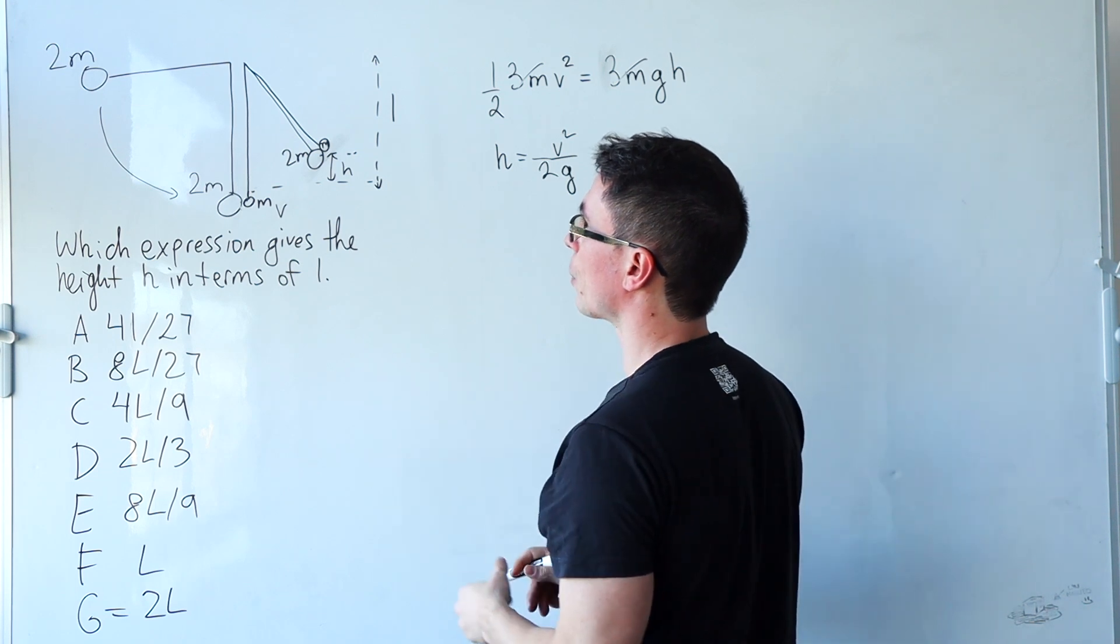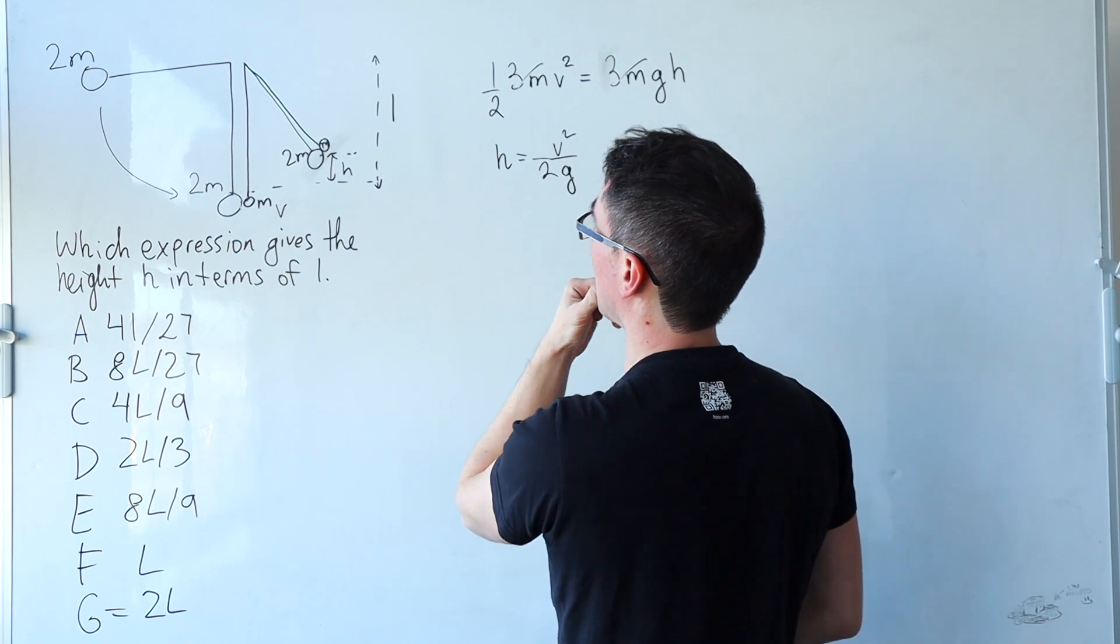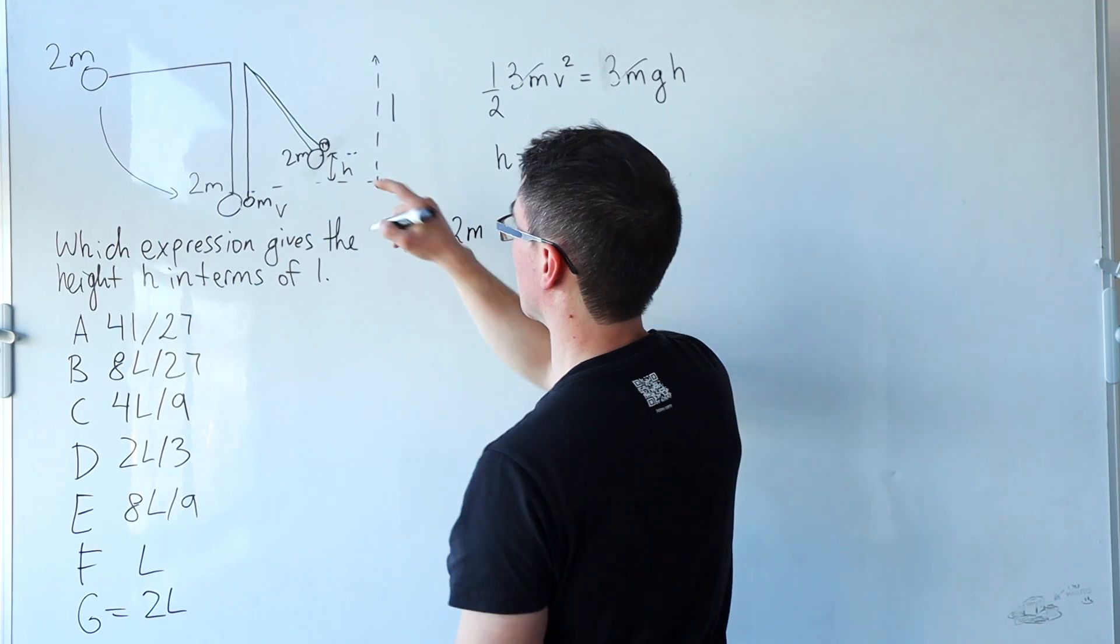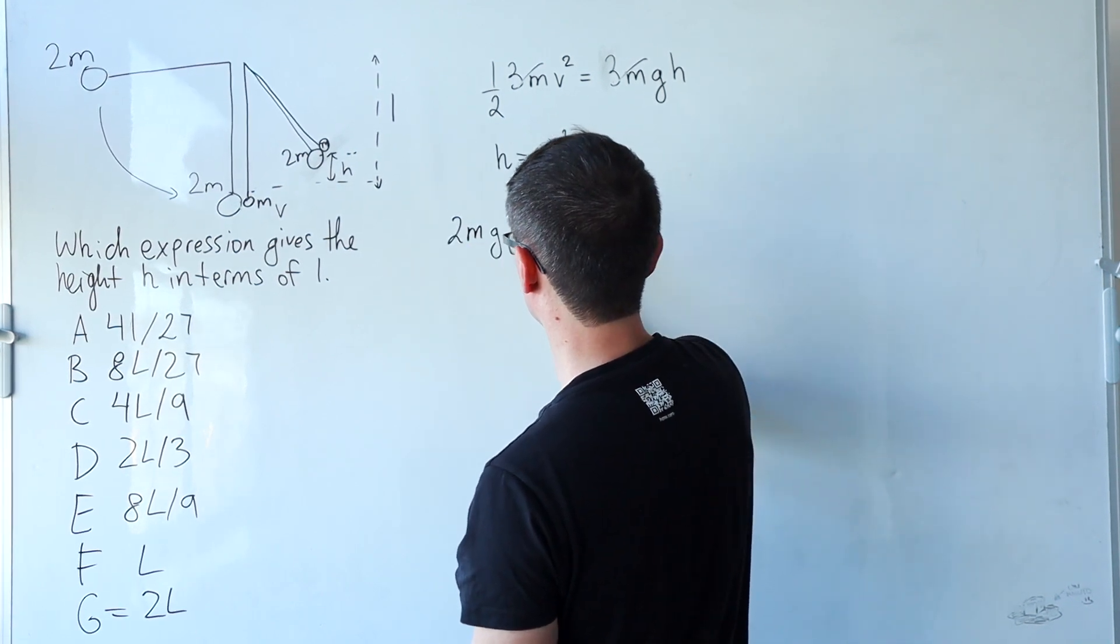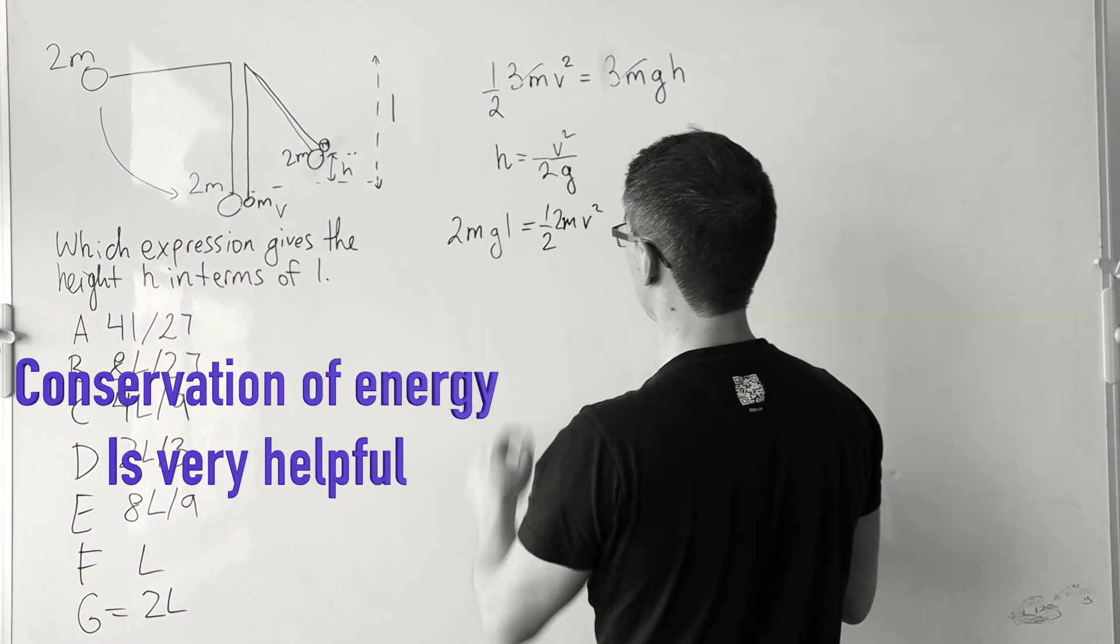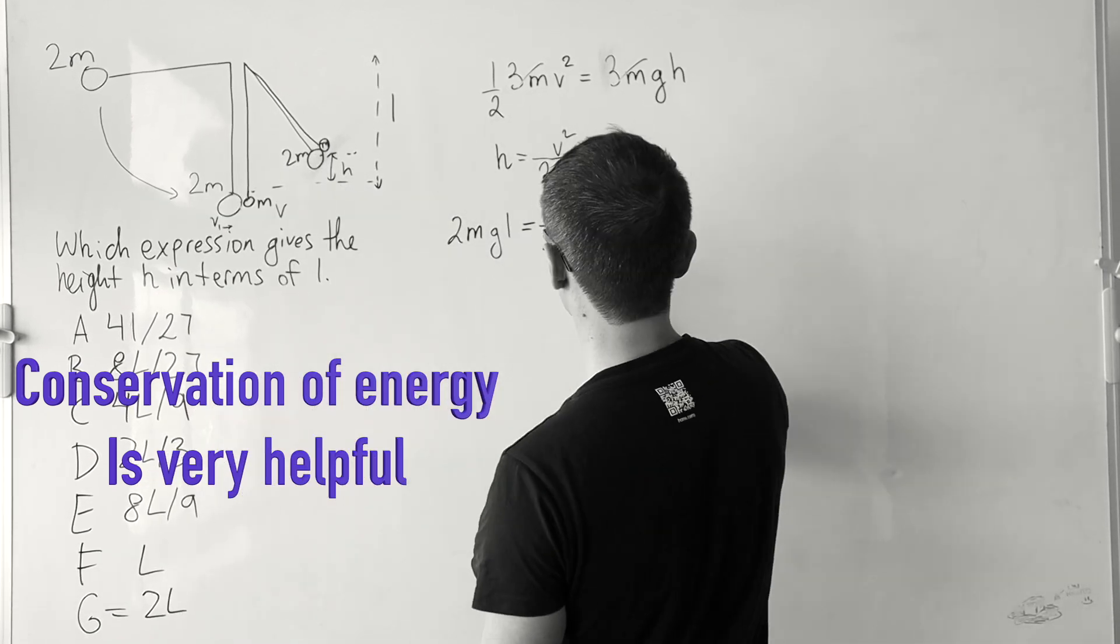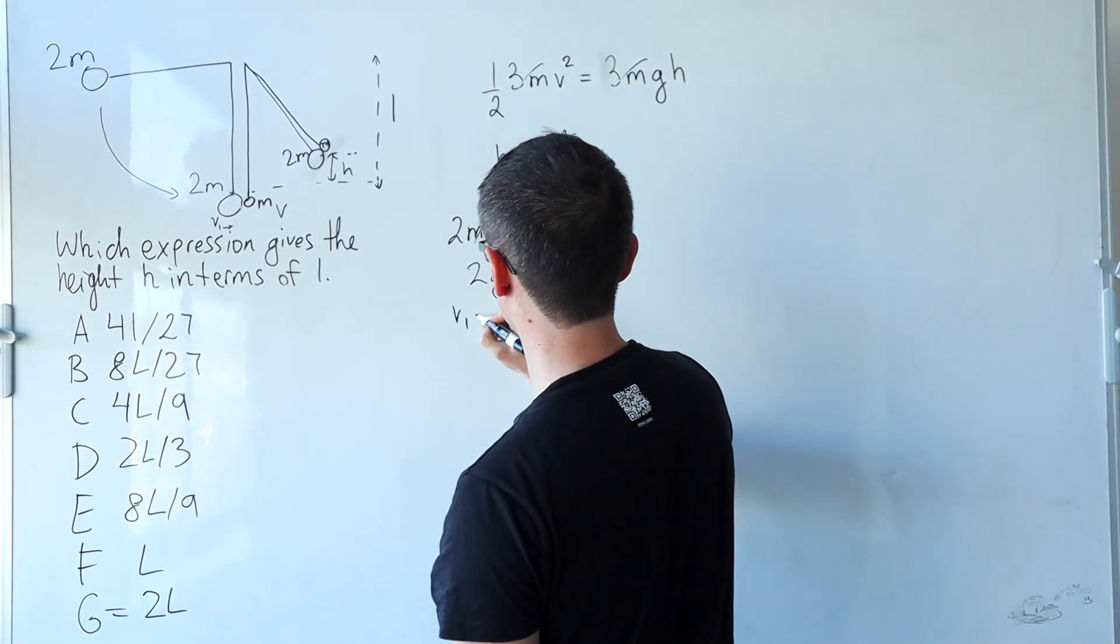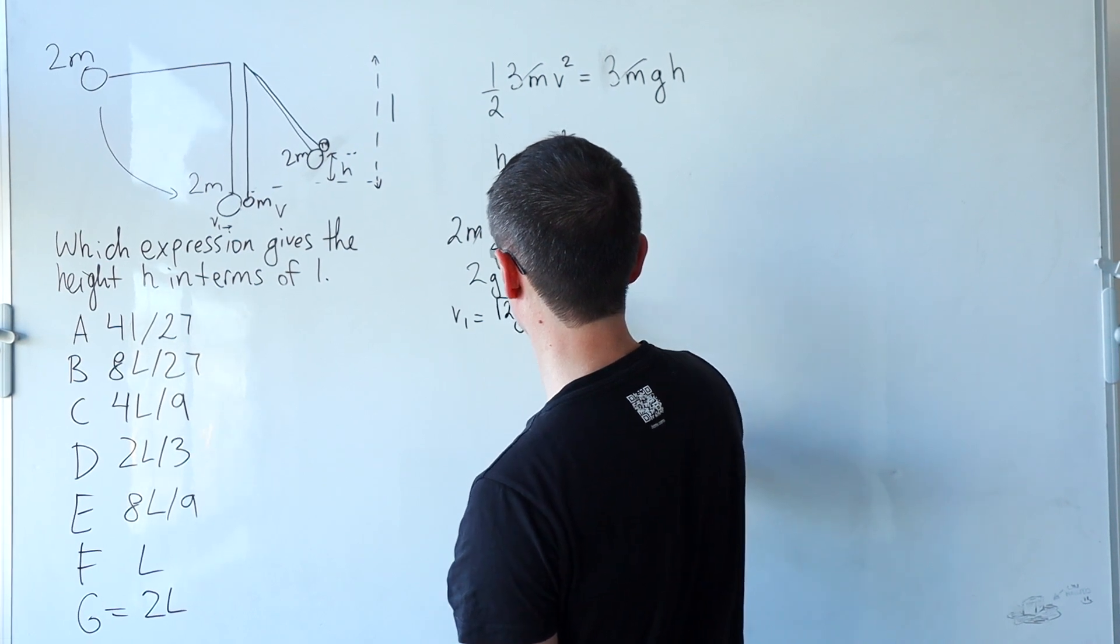Okay, so if this thing is dropped from a height L, then it's going to have some potential energy which will be given by 2m GL. Then I used exactly the same method to figure out the speed V1 with which the mass 2m strikes the bottom of the arc. V1 will be the square root of 2GL.